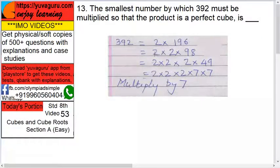Again 2 into 2 into 2 into 98, again 2 into 2 into 2 into 49. So 2 into 2, this becomes a group of 3, that's what we want. Now what is 49? 7 into 7.